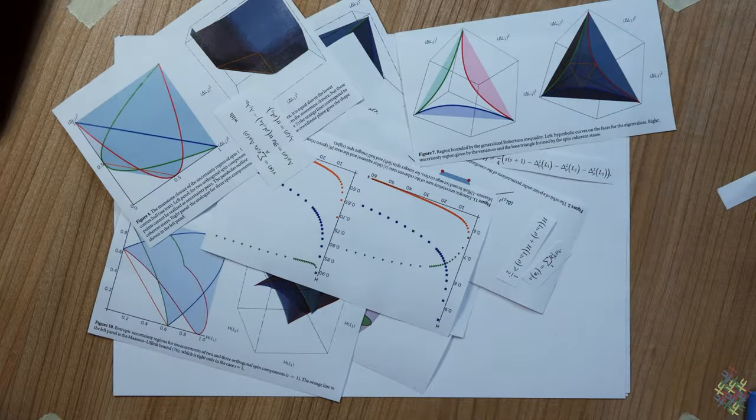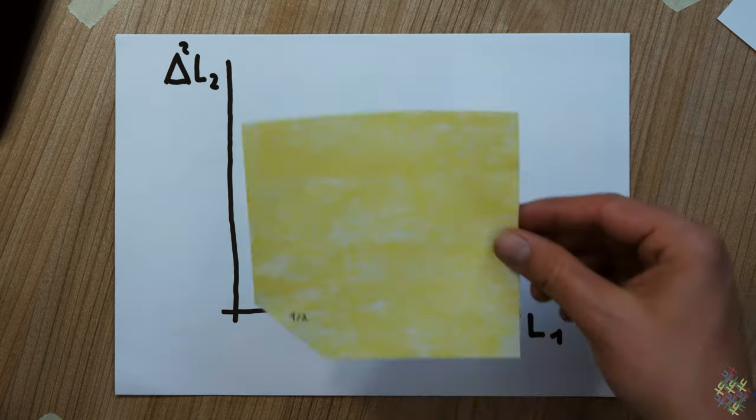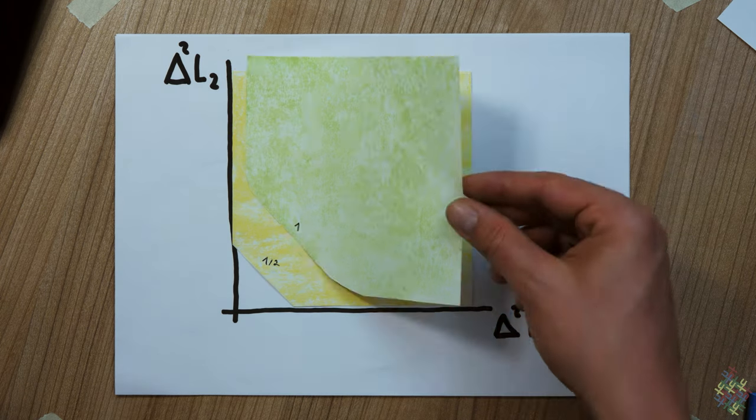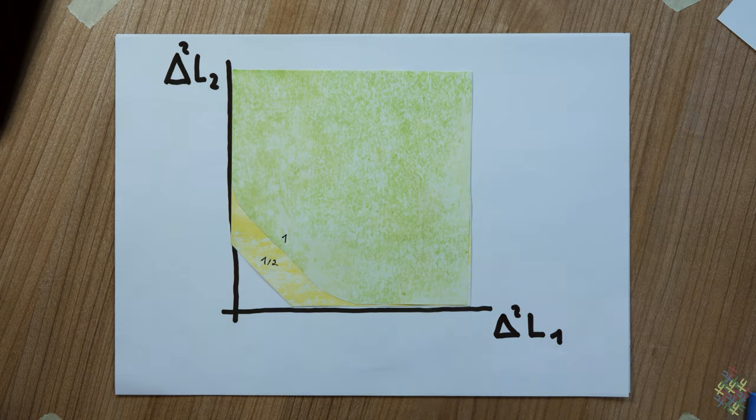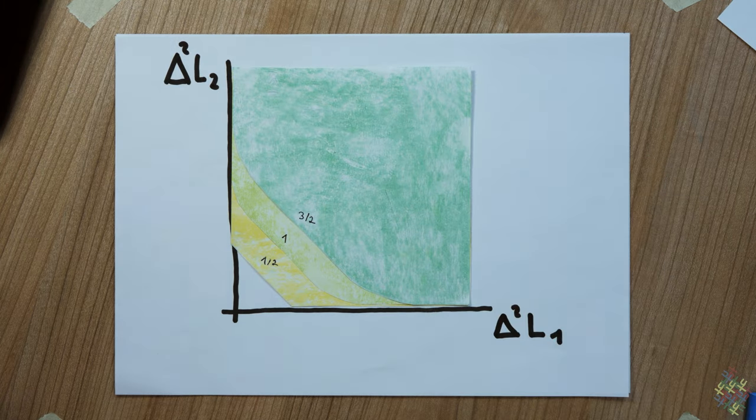Actually, we provide you with an efficient algorithm to compute the precise trade-off curves for arbitrary observables a and b. So here are the diagrams for two angular momentum components for various values of the angular momentum quantum number s: one half, one, three half, two, and so on.